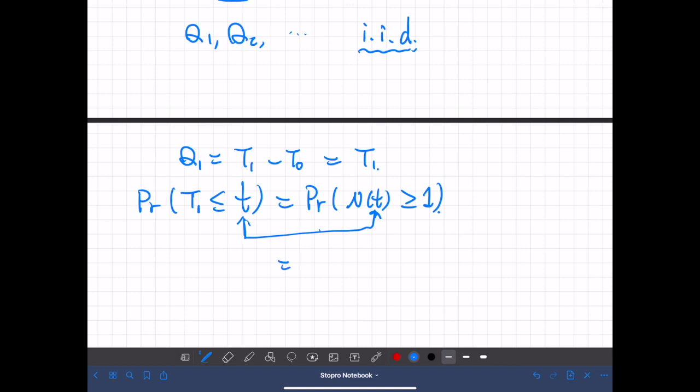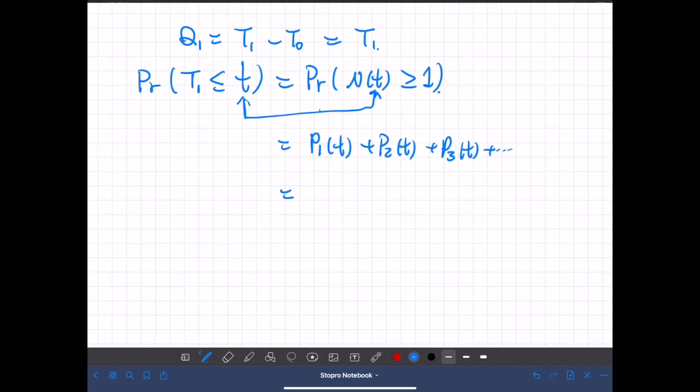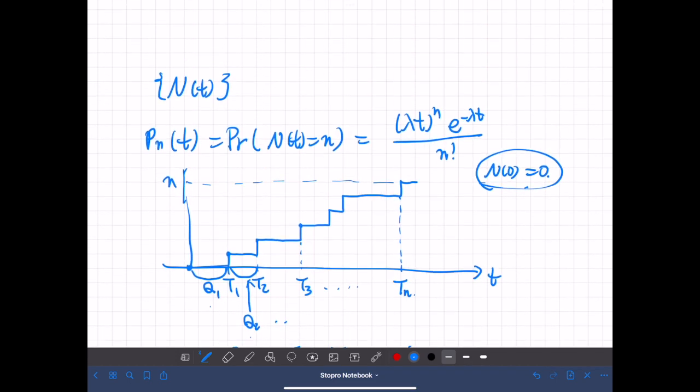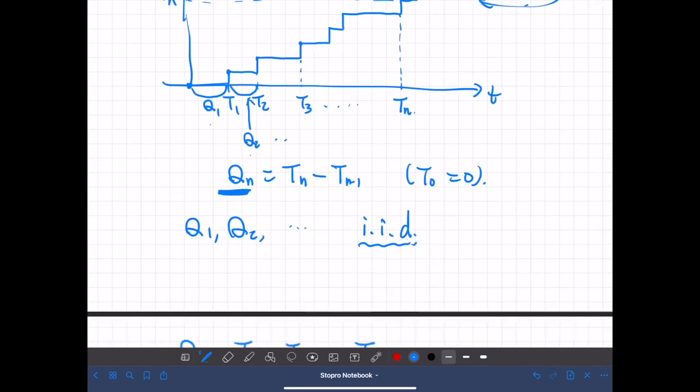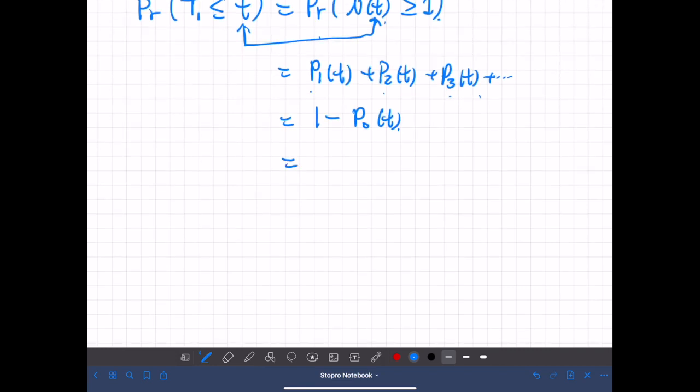So this means we add all of the probabilities: n equal to 1, n equal to 2, n equal to 3, and so on. So this is actually every possible value of n of t, except for 0. So that means this is equal to 1 minus p0 of t. But according to the definition of the Poisson process, when n equals 0, this probability is equal to exponential of negative lambda t.